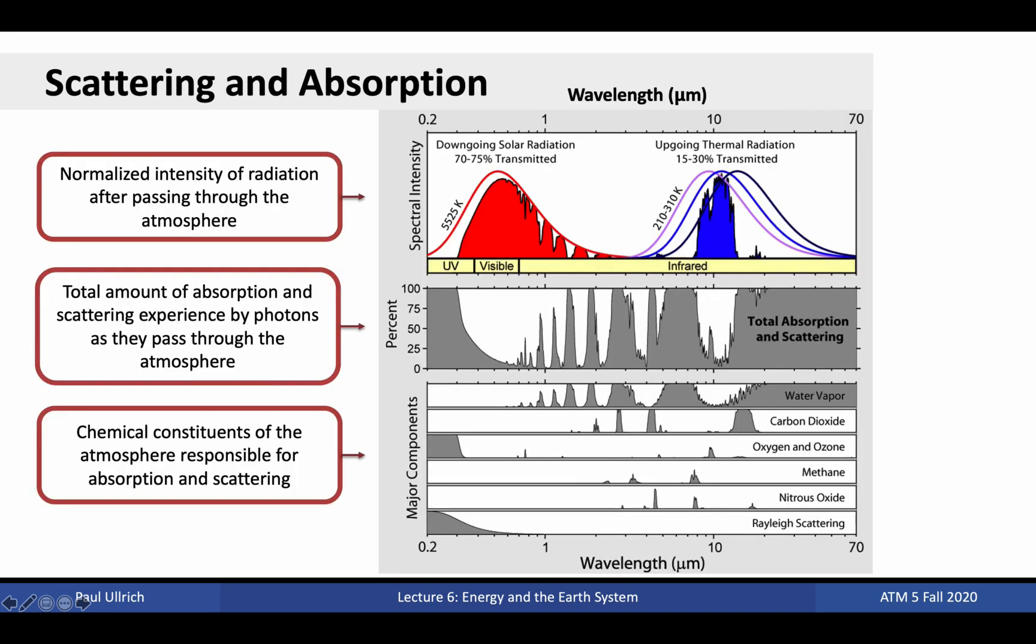This slide is the most important for understanding how solar radiation and terrestrial radiation are different, and in understanding how the atmosphere responds to each. The top plot here shows the amount of solar radiation at each wavelength at the top of the atmosphere normalized to total incoming solar radiation in the red line. The radiation actually observed at the surface is shown in solid red. Similarly, the blue lines show terrestrial radiation at the surface, and the blue solid region shows observed terrestrial radiation at the top of the atmosphere.